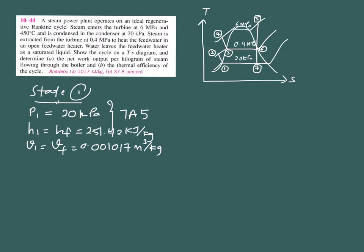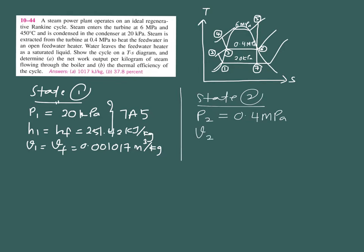You also are going to need the value of your specific volume, because state 1 to 2 and state 3 to 4 is actually your pump — so there will be two pumps inside your cycle. You need to find the first pump in between state 1 and 2. The function of your pump is just to increase the pressure so that it will pump back into your boiler again.